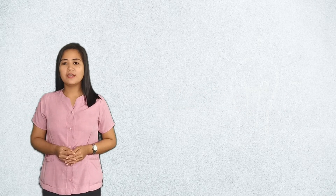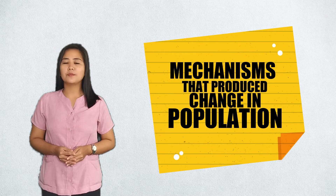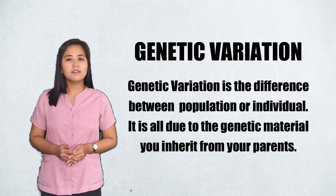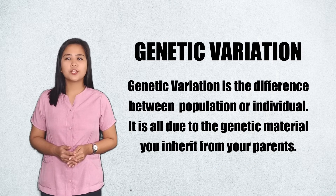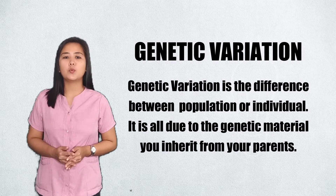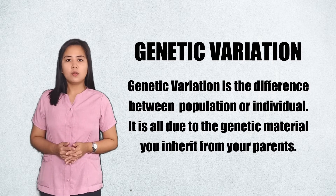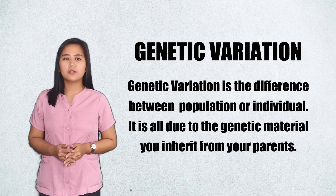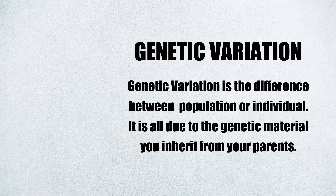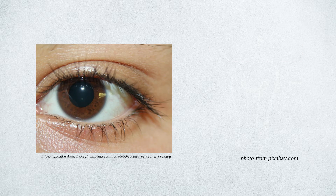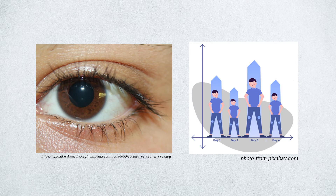Our lesson for today is about mechanisms that produce change in population. So, what is genetic variation? Genetic variation refers to individual differences between a population or individual. It is also due to the genetic material you inherit from your parents. For example, you might inherit the brown eye color or the height of your parents that is not present in your other siblings.